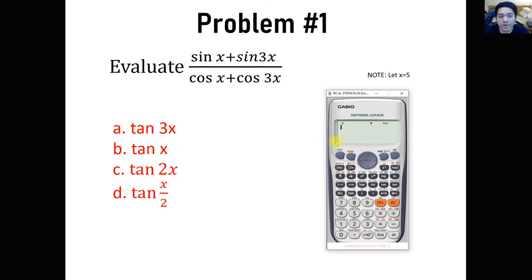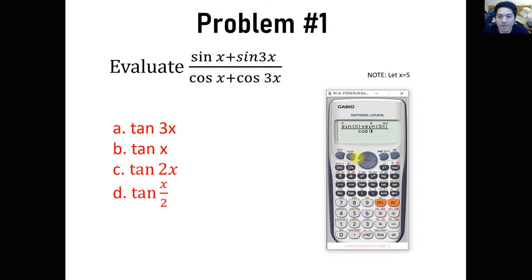The very first thing we're going to do here is let x equal 5. Make sure that your calculator is in degree mode. So let's type sine of x plus sine of 3x, all over cosine of x plus cosine of 3x.